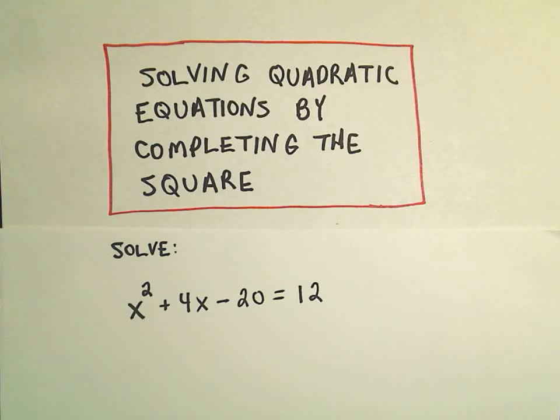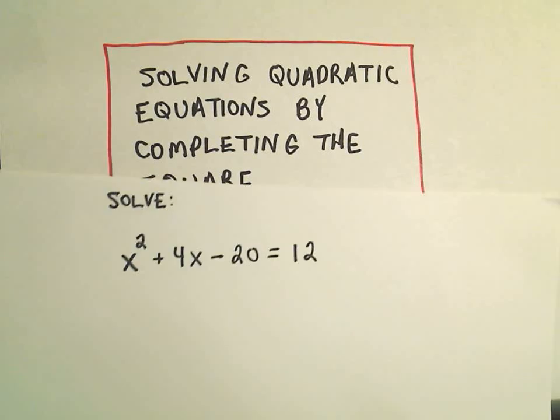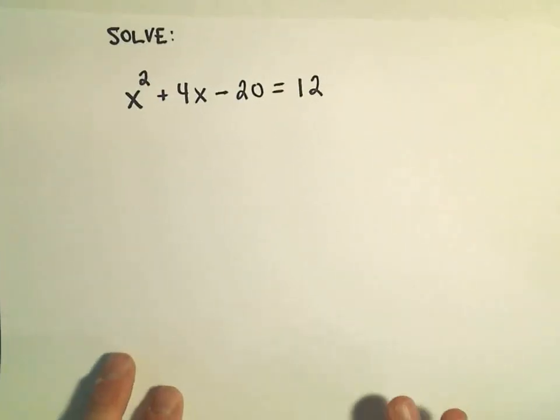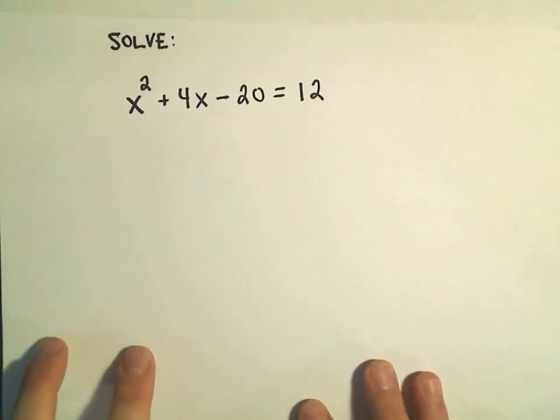Alright, in this video I'm going to do another example of solving a quadratic equation by completing the square. So in this case we're going to solve x squared plus 4x minus 20 equals 12. There's probably slightly easier ways to solve this quadratic other than completing the square, but we're just trying to illustrate the procedure here.